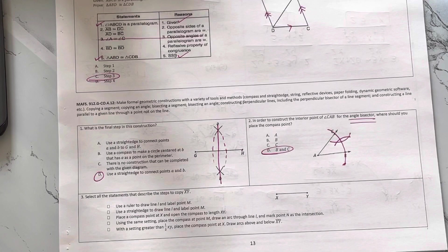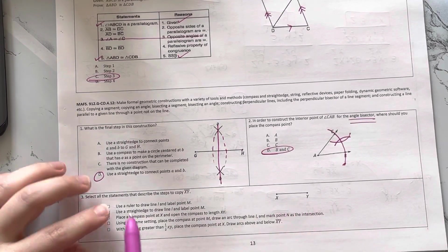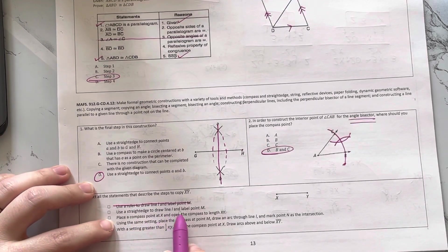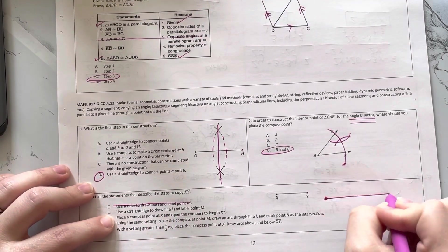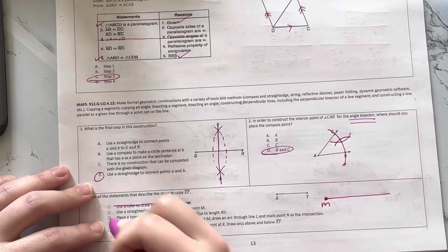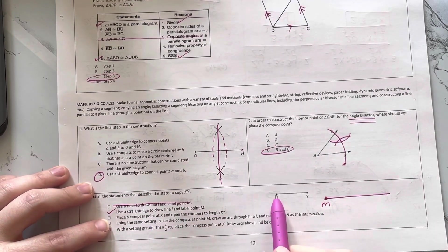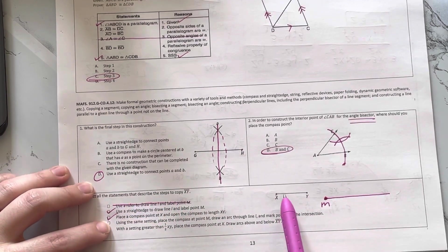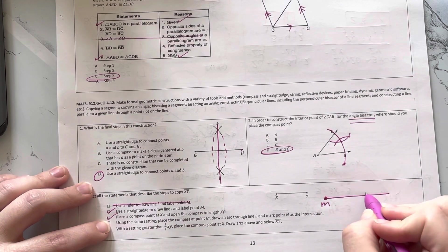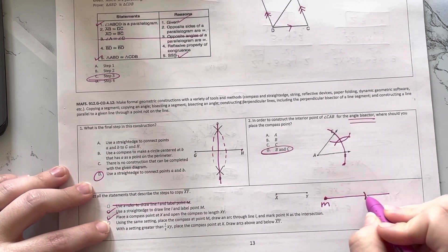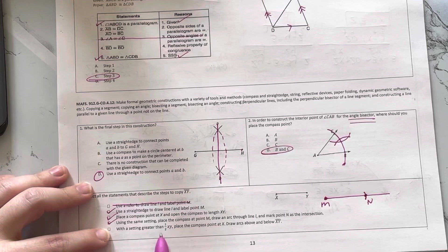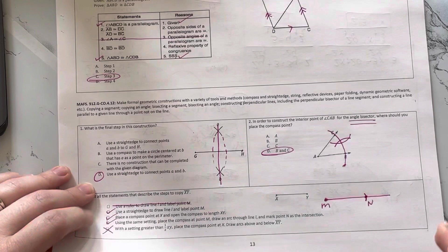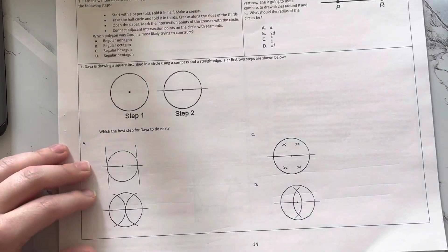Select all the statements that describe the steps to copy a segment. Using a ruler. We do not use rulers and constructions. Use a straight edge to draw a line L and label point M. Alright, definitely want that. Place the compass at X and open it to the length. Okay, I want to know how long that is. Using the same setting, place the compass at M and draw an arc. I would definitely want to do that, and we could mark that as N. With a setting greater than one half of, I don't want anything greater than. So I just want these three.